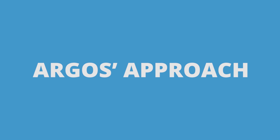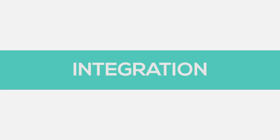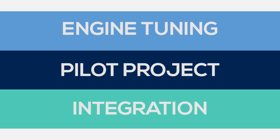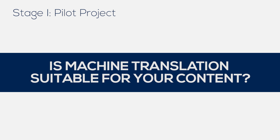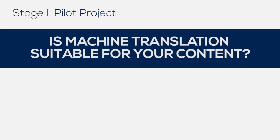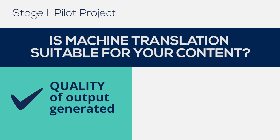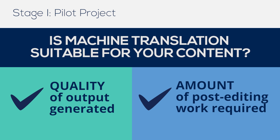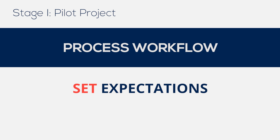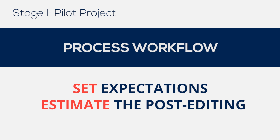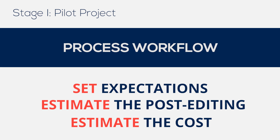The Argos approach to machine translation is a three-step approach. These three steps help to ensure that MT is appropriate for you and for your content. Before throwing our clients headfirst into MT, we'll first determine whether the content is suitable for the mechanics of machine translation. Our process begins with a pilot project where we test the content and engine to determine the quality of the output generated and the amount of post-editing work needed. It's at this stage where we can determine the suitability of machine translation to the given content, set machine translation expectations, and estimate post-editing efficiency and the cost per word of producing translations of human translation quality.